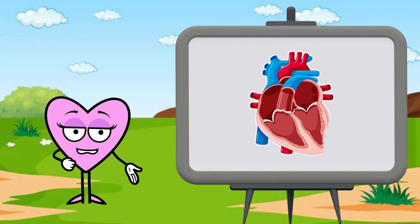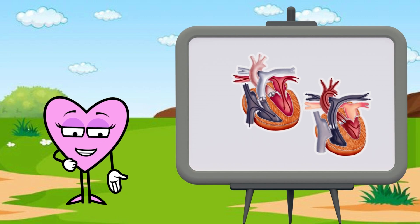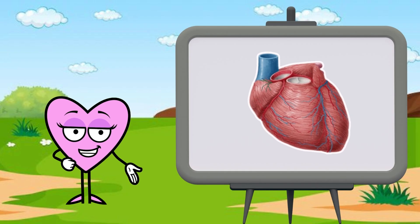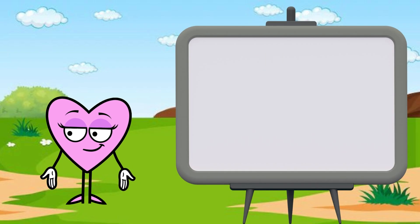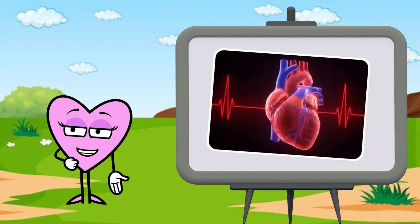Your heart has four chambers, like four little rooms, two atria on top, and two ventricles on the bottom. A special group of cells called the sinoatrial node, or SA node, acts like a tiny electrical clock. It sends out signals that tell your heart when to squeeze. This is what makes your heart beat in rhythm.